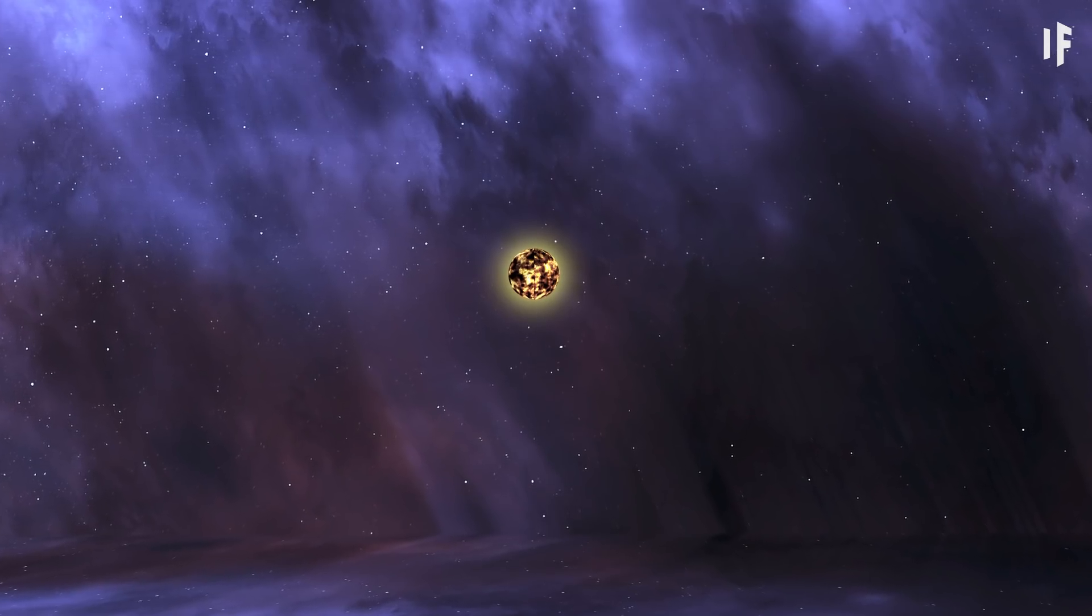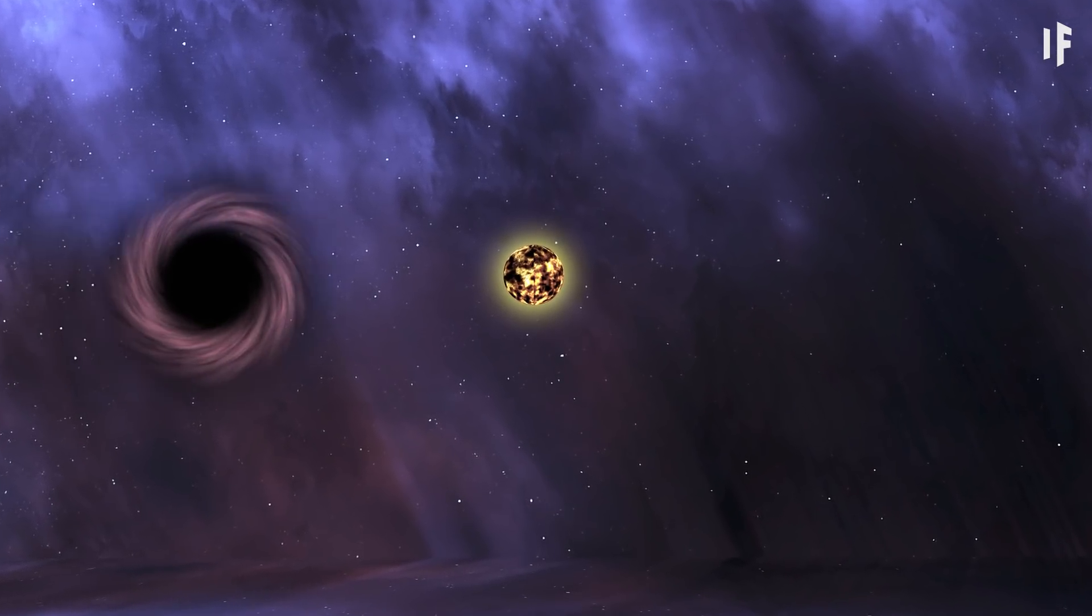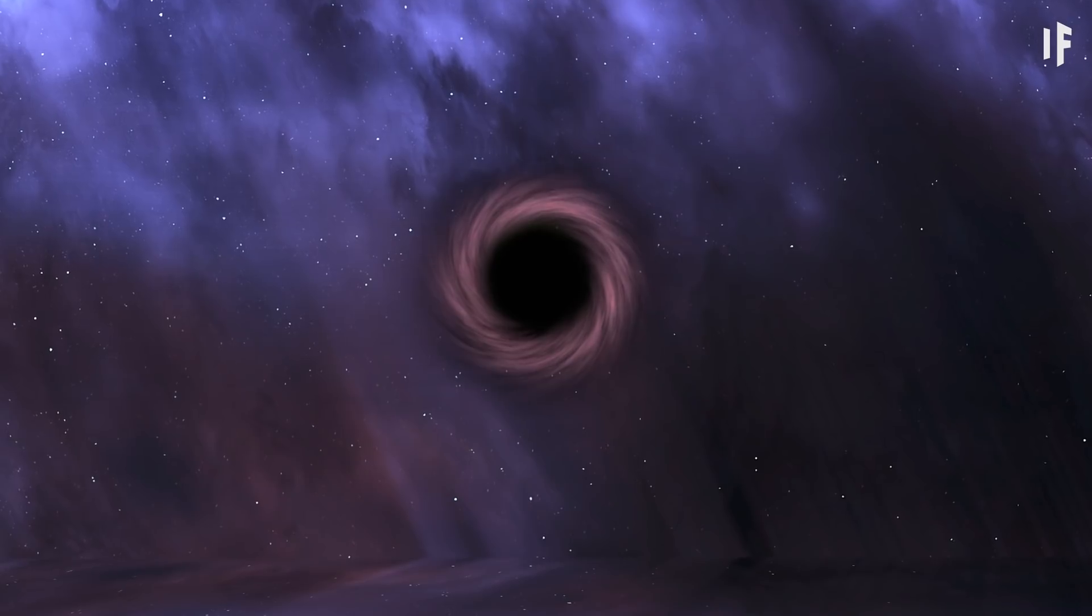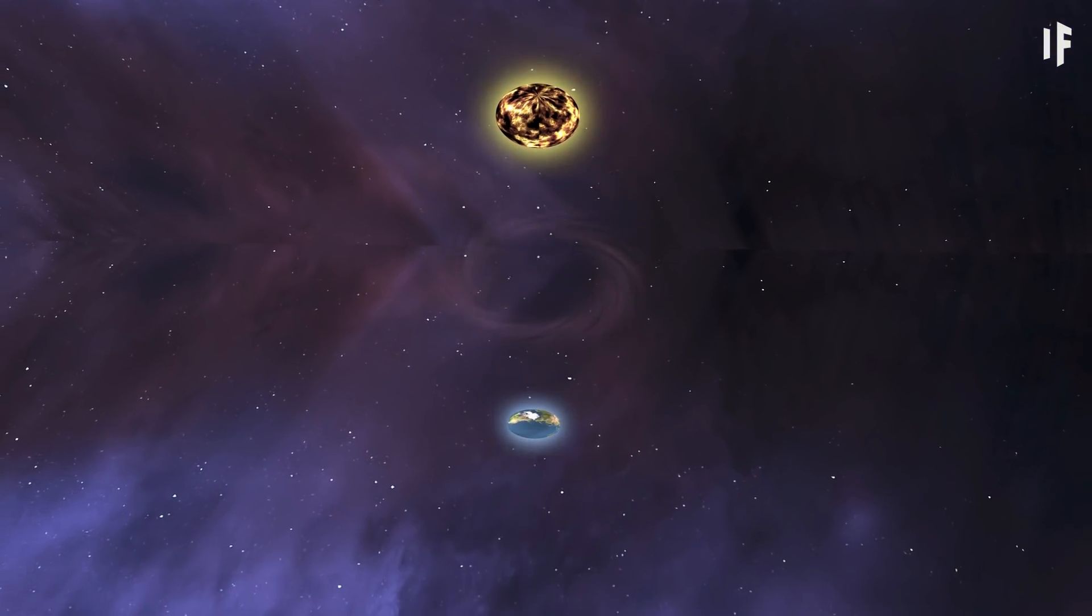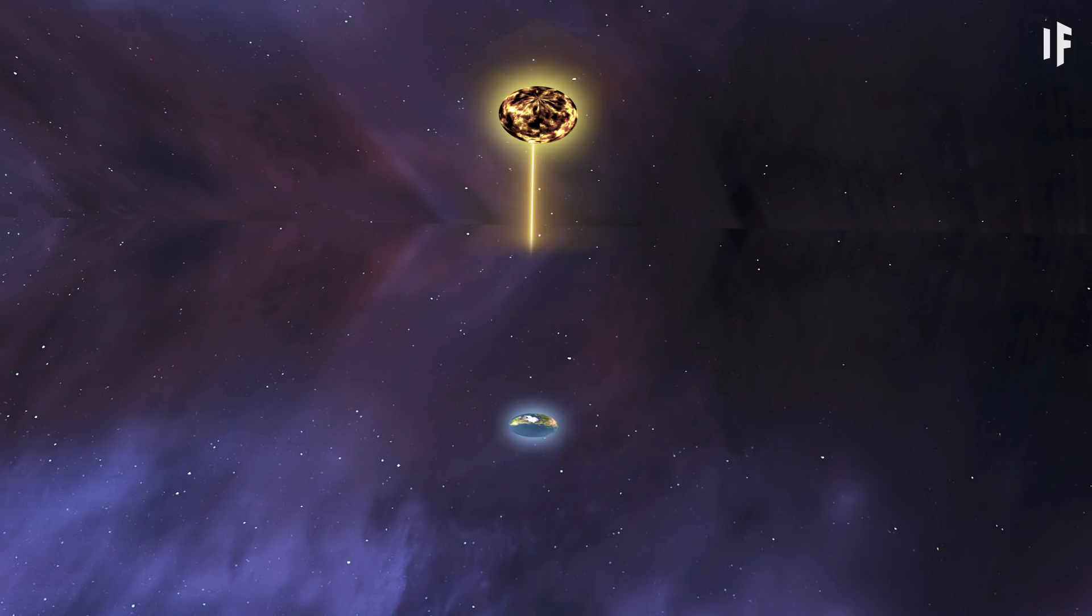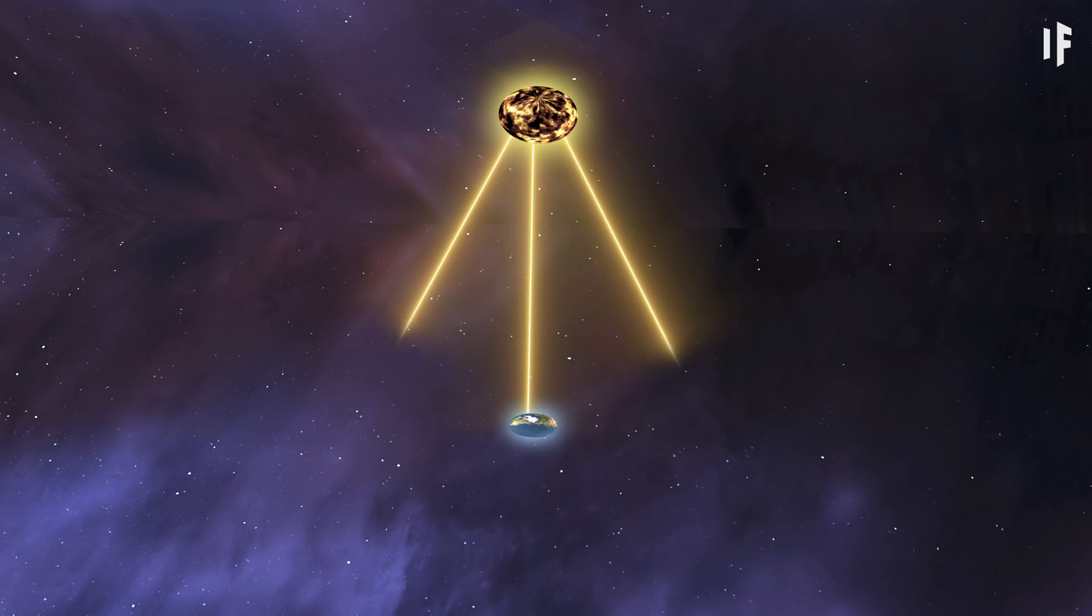Imagine a star in space that, from our perspective, is obscured by a black hole. The star sends out light in all directions. Some of this light would usually reach our eyes on Earth, and some would just disappear in other directions.